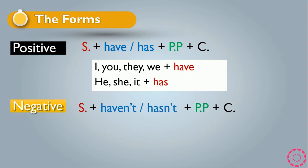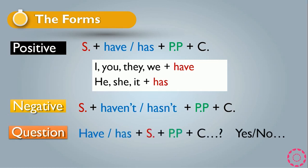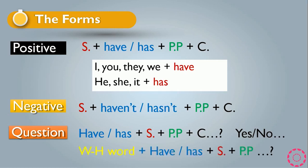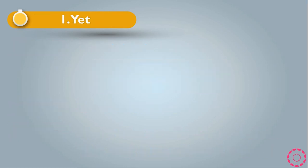For negative: subject plus haven't or hasn't plus past participle plus complement. For questions: have or has at the beginning plus subject plus past participle plus complement. We answer with yes or no. For wh-questions: wh-word at the beginning followed by have or has plus subject plus past participle.